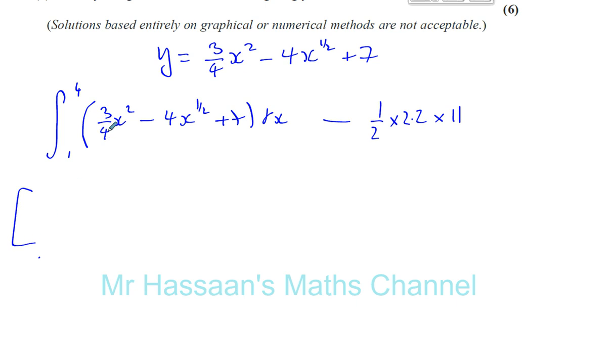So you have 3 quarters X cubed over 3. 3 quarters X cubed over 3. The 3s will cancel out, leaving you with X squared over 4. X cubed over 4, sorry. X cubed over 4. You add 1 to the power and you divide by the new power. When you divide by the new power, that new number, that 3 will cancel with this 3.